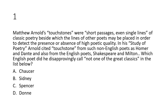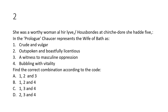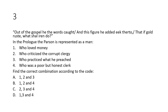Question number two: 'She was a worthy woman — her lovers, her husbands at church doors, she had five.' In the Prologue, Chaucer represents the Wife of Bath as: one, crude and vulgar; two, outspoken and boastfully licentious; three, a witness to masculine oppression; and four, bubbling with vitality. Find the correct option according to the code given below.